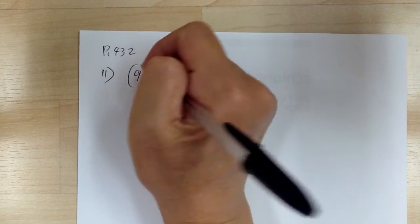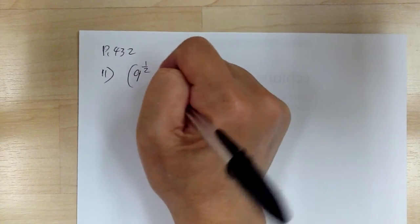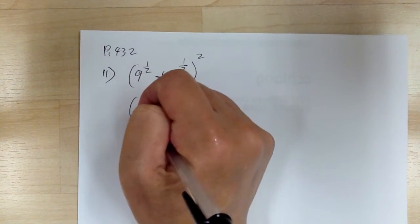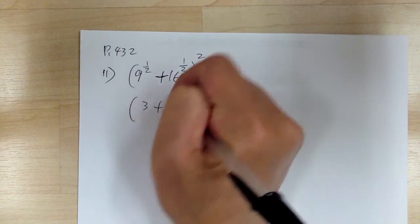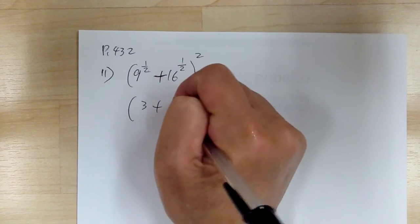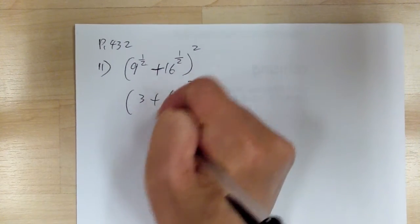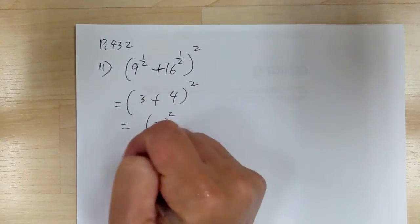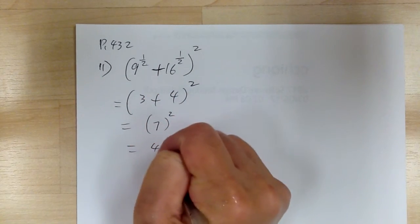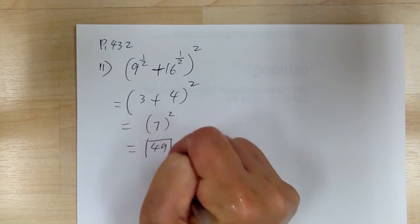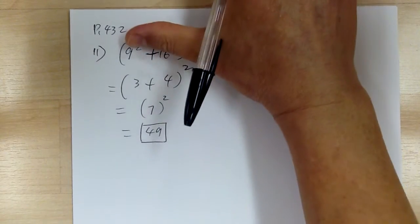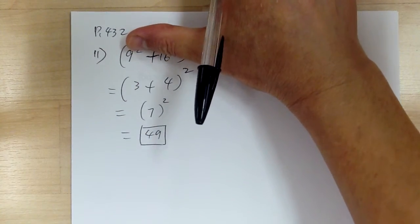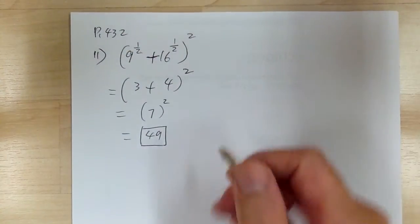What you need to do is work out each part because these are terms. So 9 to the 1 half power is 3, 16 to the 1 half power is 4, so you get 7 squared and so you get 49. Do not distribute this and make it 9 plus 16 to get 25 — that would be incorrect.